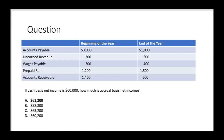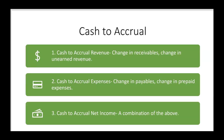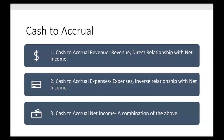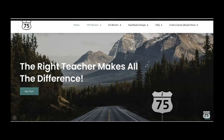The answer is $61,200, which is answer choice A. There is no shortcut to solving this type of question. As cash to accrual multiple choice questions go, this is probably the toughest one you'll ever see — it's not just revenue or just expenses, but a net income question combining all of those elements. If you want to memorize anything, the only thing to memorize is that revenue has a direct relationship with net income and expenses have an inverse relationship with net income. If you found that video easy to follow, go to CPAexamTutoring.com and get on I-75 with me, Darius Clark, because the right teacher makes all the difference.